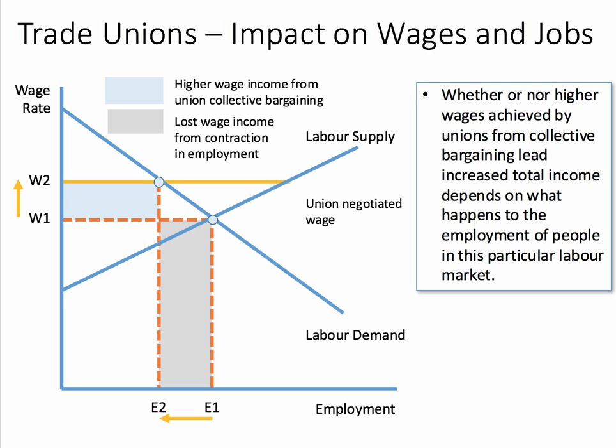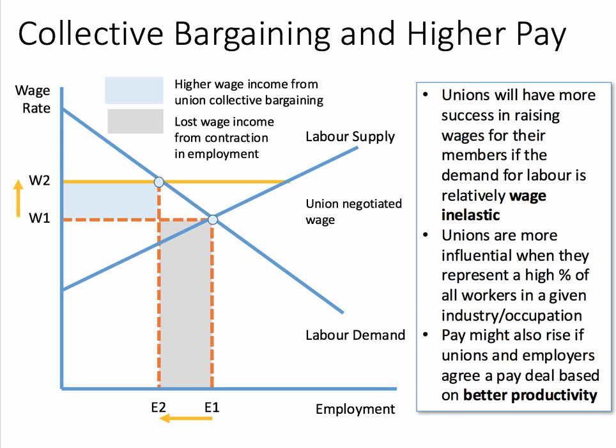Here's the key evaluation point to help your analysis. Whether or not higher wages achieved by trade unions from their collective bargaining leads to the total income of workers going up depends on what happens to employment — in other words, it depends on the elasticity of demand for labour. Unions will tend to have more success in lifting the wages or total incomes of their members if the demand for labour is relatively inelastic. In my example, the demand for labour is relatively elastic and the fall in employment more than offsets the increase in wage income.